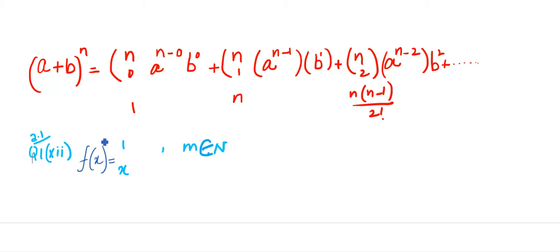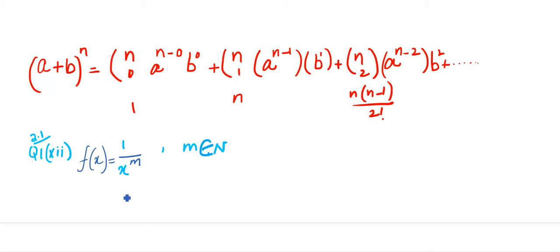In this lesson, we will do exercise 2.1. We will solve question number 1, which has 12 parts. The question is: f of x is equal to 1 divided by x raised to power m, and m belongs to the natural numbers. This is a very simple question. In the last question, you had simple x raised to power m; here it is 1 divided by x raised to power m.